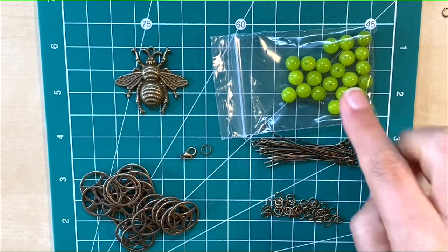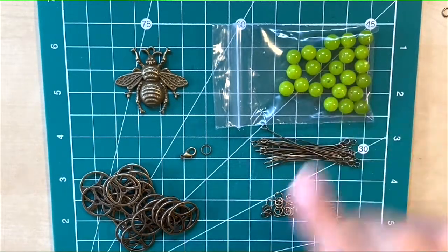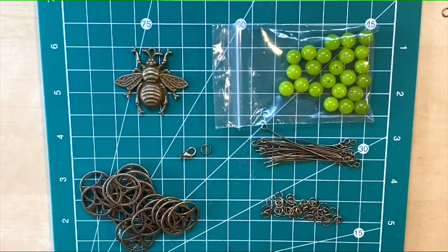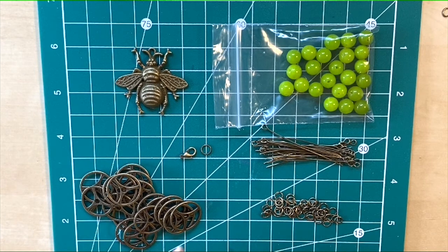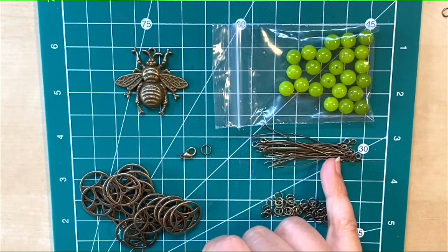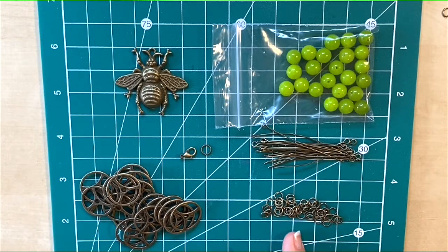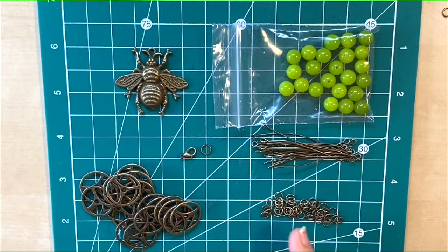Each pack will differ slightly. There will be a selection of beads, a pendant for the bottom of your necklace, cogs and gears, eye pins, and jump rings.